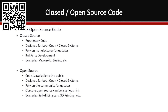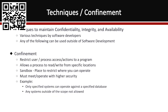Some good examples of open source are self-driving cars, 3D printing, etc. It allows for a lot of innovation and optimization. But there are trade-offs with all of these. Some techniques to maintain the CIA — confidentiality, integrity, and availability — can be used by software developers. These are some good ideas for the software development lifecycle, though they are not all-inclusive.